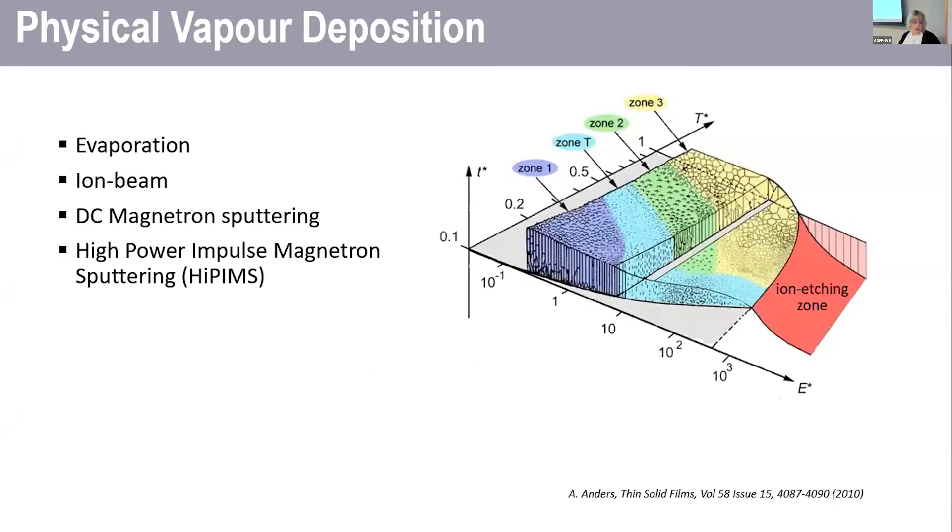So there are a number of commercially viable physical vapor deposition techniques. The reason for choosing one over the other would just be based on what kind of a film it can produce.